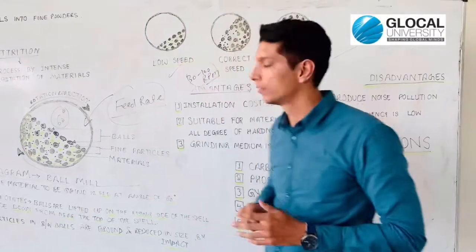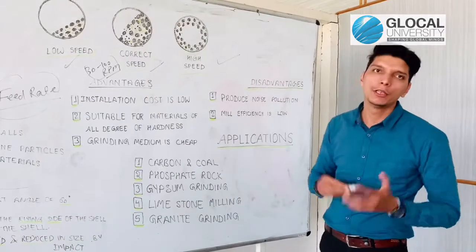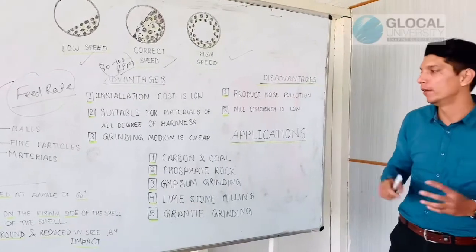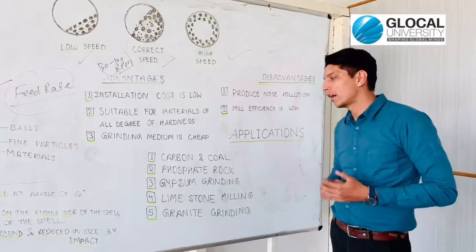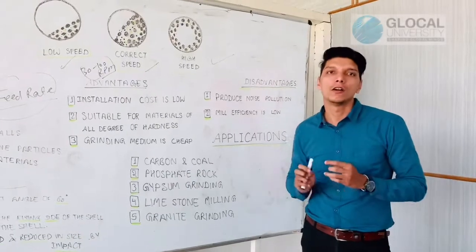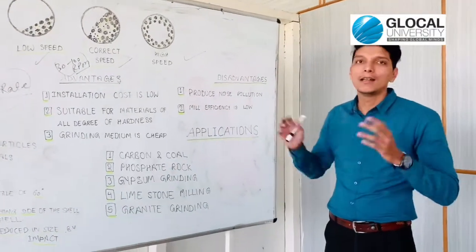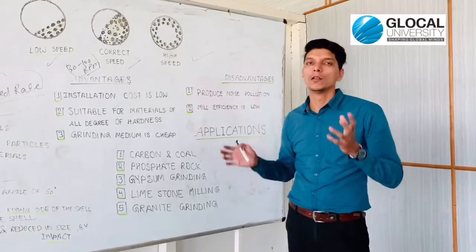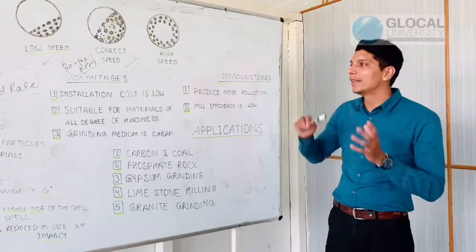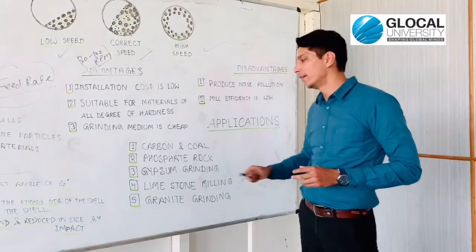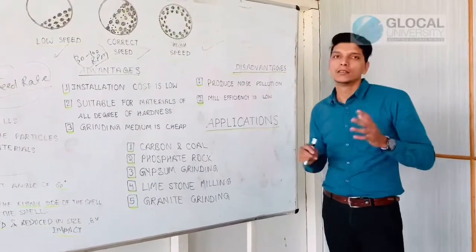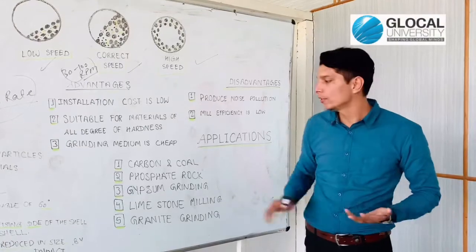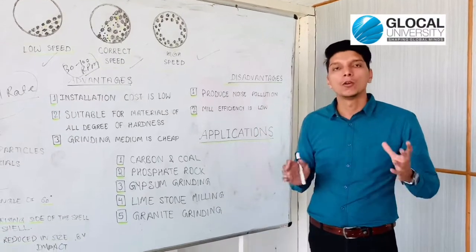Now its applications. Due to its economical efficiency, ball mill is used in pharmaceutical industry in various fields. First is carbon and coal - it is used for size reduction on a larger scale. Next is phosphate rocks. Since phosphate rocks are hard, this machine can easily reduce their size. Next is gypsum grinding. Gypsum industry is large in pharmaceutical and cement industries, and gypsum rocks can be easily processed by this mill.